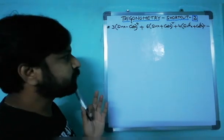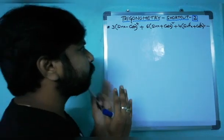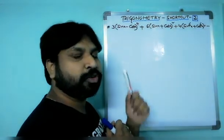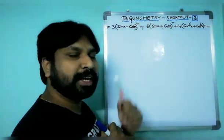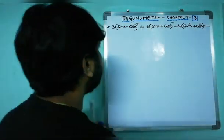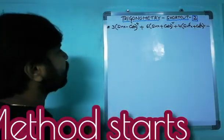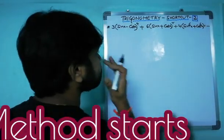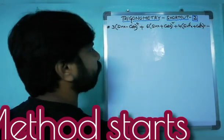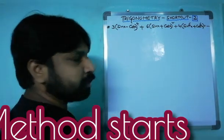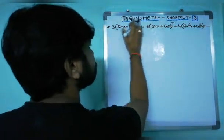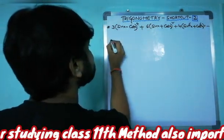Friends, this kind of question has a very good shortcut. First I want to reveal the method, then I'll go for the shortcut. So how to simplify this kind of question — (sinx - cosx)⁴ is there. Let us simplify this.